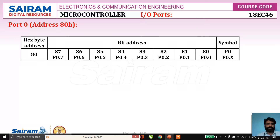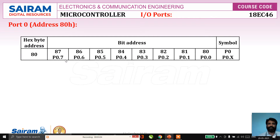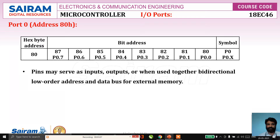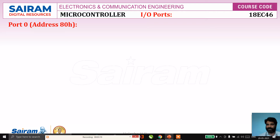Port 0 has an address of 80H. The bit addresses range from 80 to 87, corresponding to P0.0 through P0.7. In general, we say P0.x, where x can be 0 through 7. Port 0 pins may serve as input/output or be used together as a bidirectional low-order address/data bus for accessing external memory.